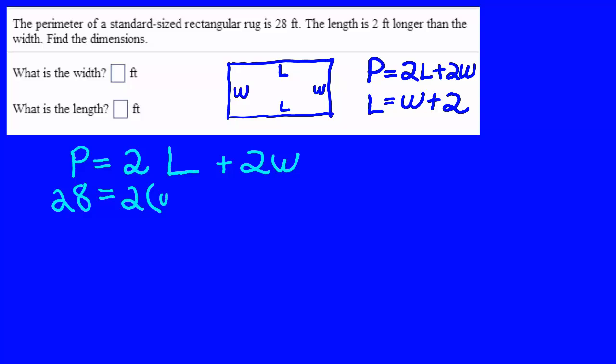So we'll say 28 equals 2 times, parentheses, W plus 2, that's what the L length equals, and then add another 2W. So we've stuck with the formula.